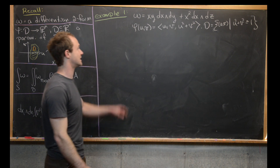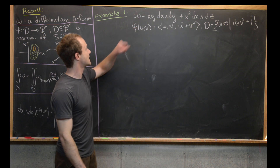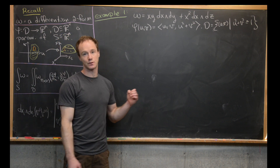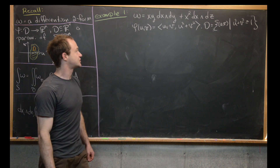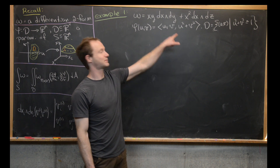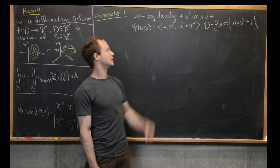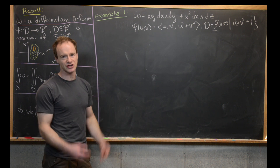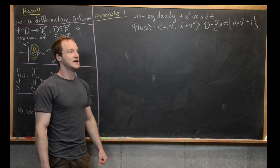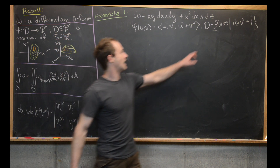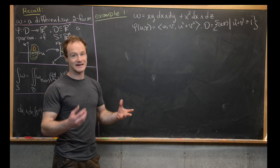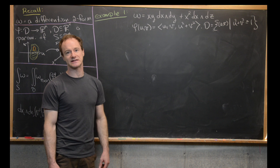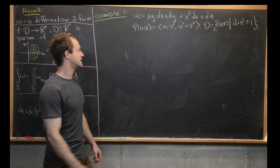Let's go ahead and look at our first example. We consider the two-form omega, which is x·y dx∧dy plus x² dx∧dz. This is happening in R^3. Our surface phi(u,v) is defined by: x-component is u, y-component is v, and z-component is u² + v². This is actually a paraboloid — the surface z = x² + y². Our region D is given by the unit disk: all points (u,v) such that u² + v² ≤ 1.